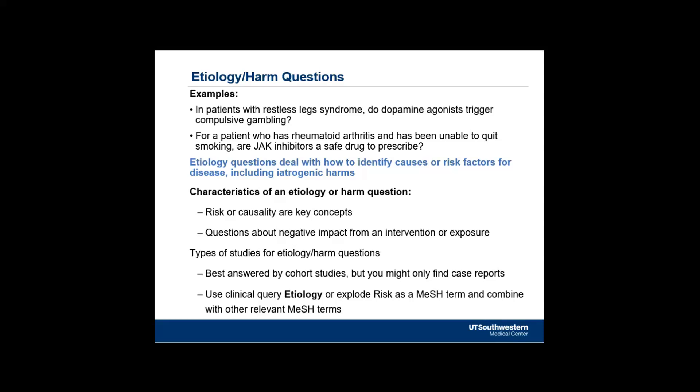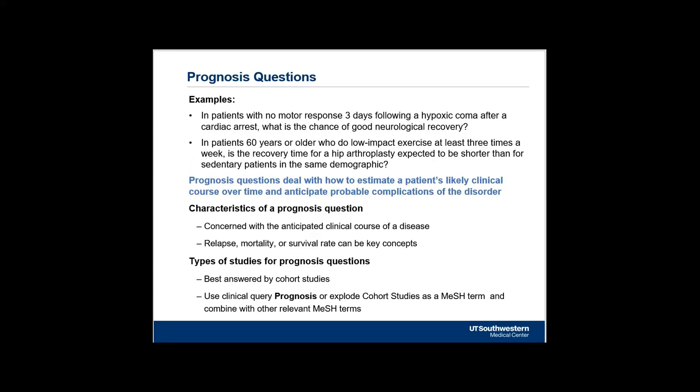Prognosis questions concern the prediction of future events. The main form is usually: what's the likelihood of this particular outcome in a patient with this disorder? These are questions about progression of a disease or likelihood of a disease occurring. In prognosis questions, you might want to include outcome terms in your PICO chart — outcome is often implied, but with prognosis you might look for terms like survival rate or disease progression. You may also want to ask if there are any patient characteristics that make a particularly good or bad outcome more likely. These are best answered by cohort studies much of the time.